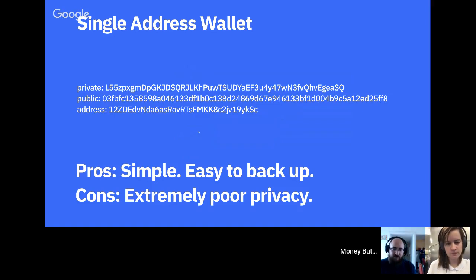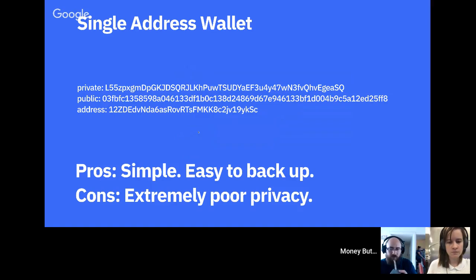The easiest way to have a wallet is to have a single address — one private key, one public key, and one address — and you send and receive all your money with that single address. Wallets like yours.org work this way, where each user has a single address. We did it that way because it's technically easier and solves a bunch of problems.